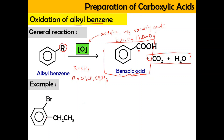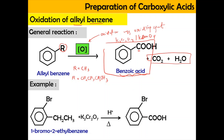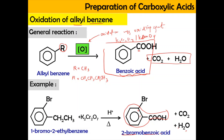For example, take 1-bromo-2-ethylbenzene. When oxidized using a strong oxidizing agent, dipotassium dichromate, under acidic conditions at high temperature, you produce benzoic acid. Since we have carbon-1 and carbon-2 with the bromine substituent, the product is 2-bromobenzoic acid. The ethyl chain is released as the byproduct, carbon dioxide and water. That's it for the oxidation of alkyl benzene.